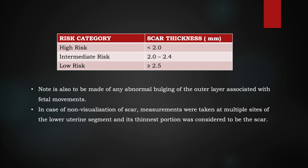Other parameters to mention include any bulging of the membranes, especially on fetal movement. If we are not able to visualize the scar — which may happen in certain scenarios or due to machine settings — we should focus on the lower uterine segment, take multiple measurements, and report the thinnest measurement obtained.